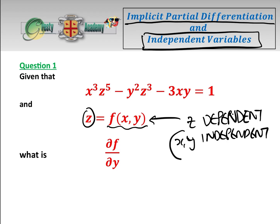One thing we can say immediately is that since x and y are independent variables, the partial derivative of x with respect to y equals zero by definition, and that is going to help us.